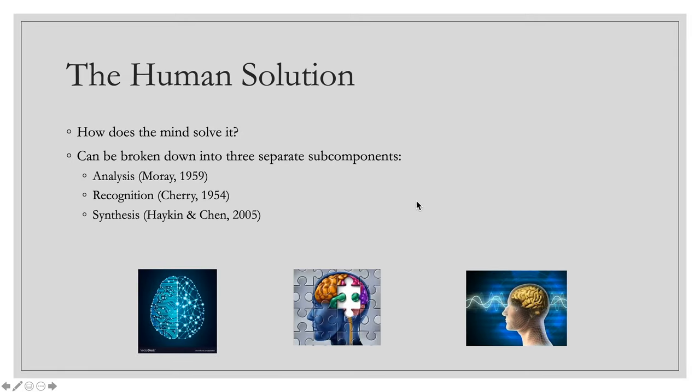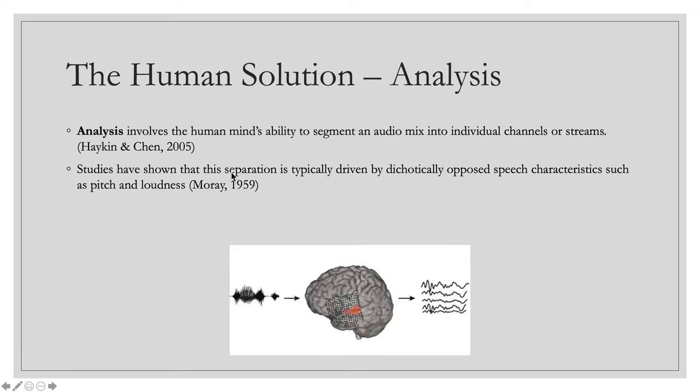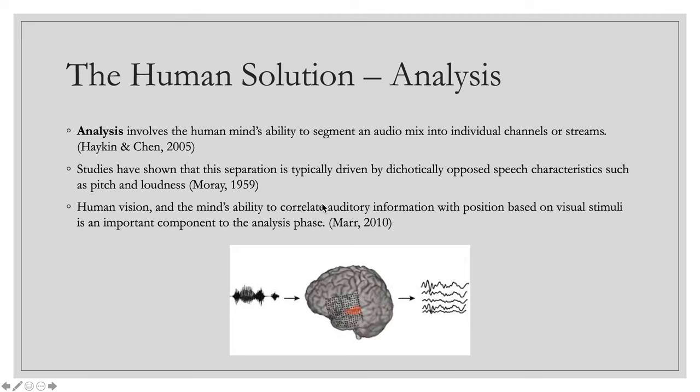Really the mind solves it in a three-phase process: analysis, recognition and synthesis. Analysis involves the human mind's ability to segment an audio mix into individual channels or streams. Studies have shown that this separation is typically driven by dichotically opposed speech characteristics and that's just a very fancy way of saying that the mind uses characteristics like pitch and loudness to separate. Here you have a graphic, here's the mix and the mind separating in different ways based on things like pitch and loudness. Also human vision and correlating visual stimuli with audio stimuli is an important component to the analysis phase.